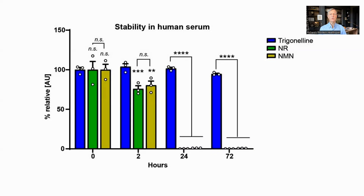One key difference between trigonelline and NMN and NR is its stability in blood. When trigonelline, NR, and NMN were placed into human serum in vitro, the NR and NMN were quickly broken down to nicotinamide while the trigonelline was stable. At time zero they were all even. After two hours, about 25% of the NR and NMN is gone, and after 24 hours there is effectively none left, whereas most of the trigonelline is still present.